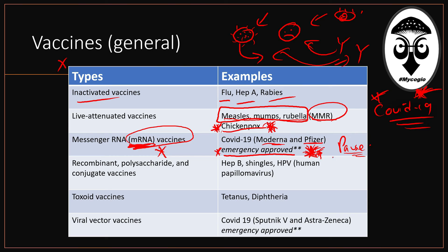Recombinant proteins and polysaccharide conjugate vaccines include hep B, shingles, and the human papillomavirus vaccine — those are approved. Toxoid vaccines include tetanus and diphtheria. When I ask younger people, they say they got it long ago but haven't gotten it recently. This is a very rare disease now, but very dangerous. If you are one of my students, we have a presentation and video about tetanus later. You can get a booster every 10 years.